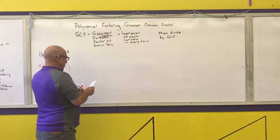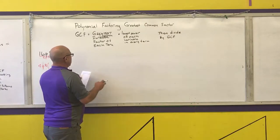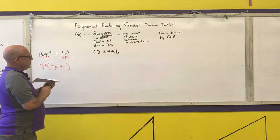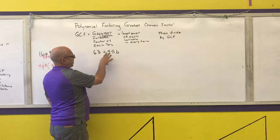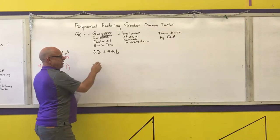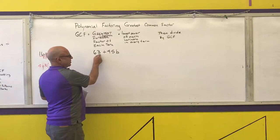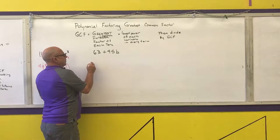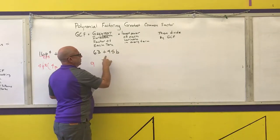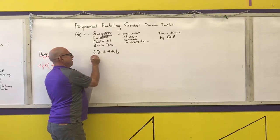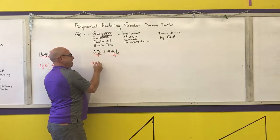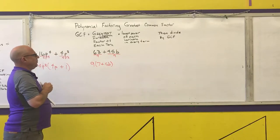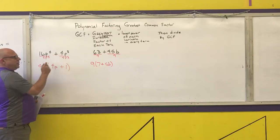Next example: 63 + 45b. Step one: find the biggest number that goes into both 63 and 45. Nine goes into 63 and 9 goes into 45 — I know that because 6+3=9 and 5+4=9, both divisible by 9, or from multiplication tables. Step two: write the lowest power of each variable — this first term has no variable, so no variables in the GCF. Then divide: 63÷9=7 and 45÷9=5, giving 9(7 + 5b). You can check by distributing to get back to the original.